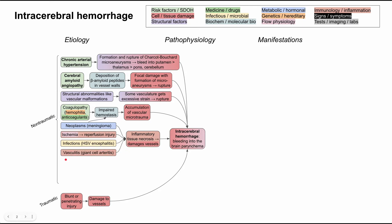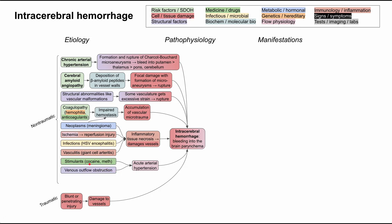Primary inflammatory disorders such as the vasculitides — including giant cell arteritis — can cause tissue necrosis and vessel damage leading to hemorrhage. Acute arterial hypertension, in contrast to chronic hypertension, can also cause intracerebral hemorrhage. Stimulants such as cocaine and methamphetamines, as well as venous outflow obstruction, can acutely raise blood pressure and trigger a bleed.